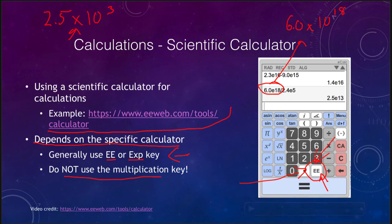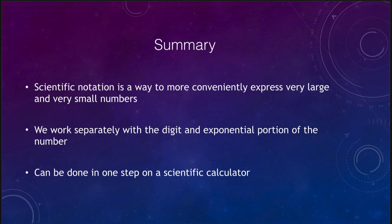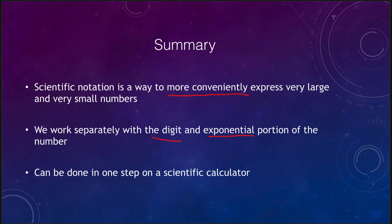To summarize: scientific notation is a way to more conveniently express very large and very small numbers used in science. When doing calculations by hand, we work separately with the digits and exponential portions, combine them, and convert to standard form. Using a scientific calculator, this can be done in a single step. That concludes our discussion of calculations using scientific notation — until next time, have a great day everyone.